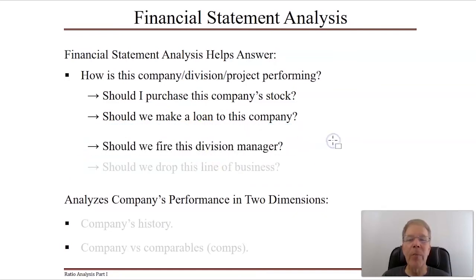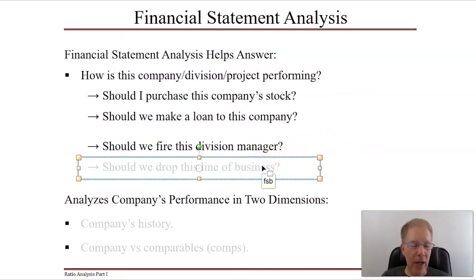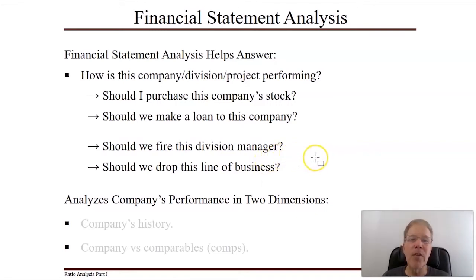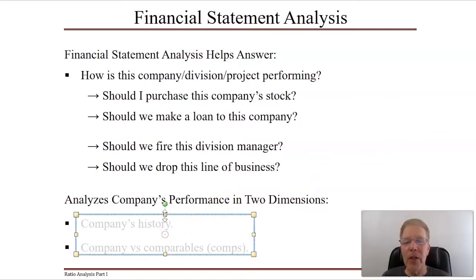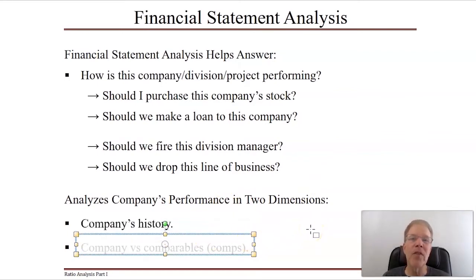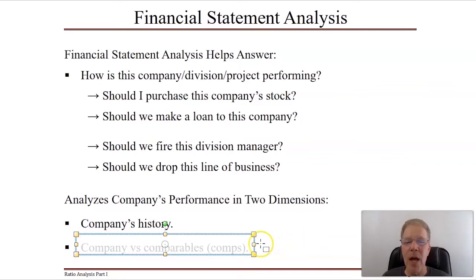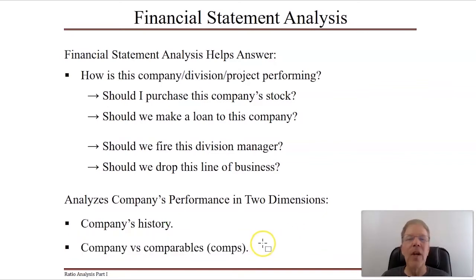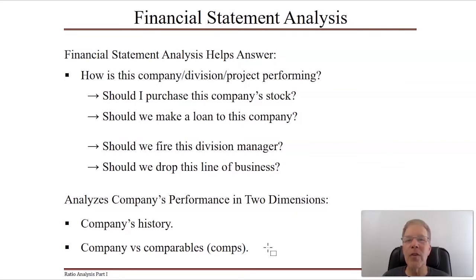Within a company, it helps us answer things like, should we fire this division manager? Should we drop this line of business because it's inherently unprofitable? Financial statement analysis also aims to look at an entity's performance in two dimensions: comparing the company to its own history — are we improving operations, reducing costs, increasing revenue? — and on the other hand, comparing to others in the industry, what we call comparables, or comps for short.